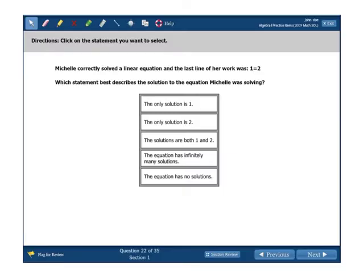This is click on the statement you want to select. And when it says the statement up here, I think that we get to think that there's one answer here. It would say each statement if it was more than one. Michelle correctly solved a linear equation and the last line of her work was 1 equals 2. Which statement best describes the solution to the equation Michelle was solving? Well, first of all, we know, we are quite aware that 1 does not equal 2. That is impossible. The two values are not equal.